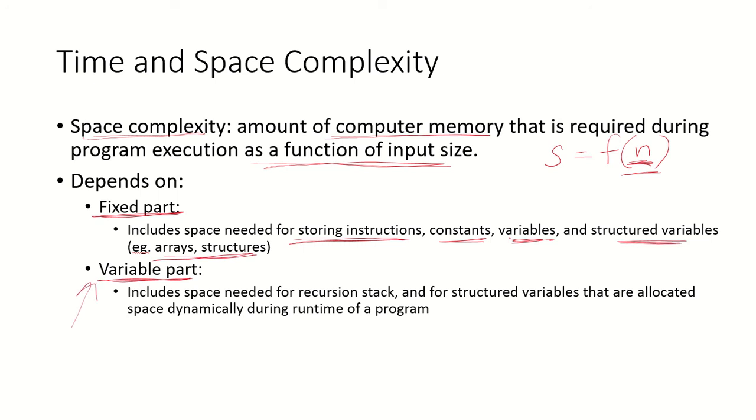What is the variable part? The variable part is the space required for the recursion stack. If we're using recursion in the program, there would be a recursion stack, and some variables would be dynamically allocated space during runtime. Many times when you use functions or calls like malloc where you're dynamically allocating space to variables, that comes in the variable part. Space complexity depends on both the fixed part and the variable part.